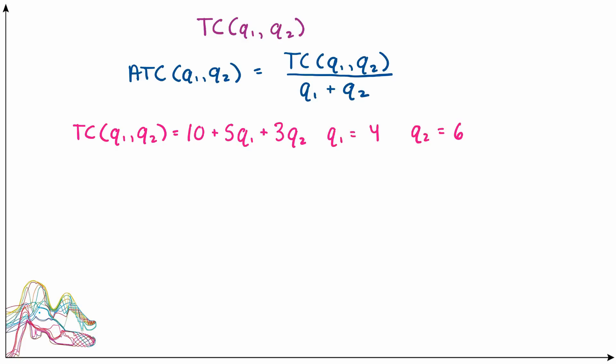Let's do an example. Here we have a total cost function with Q1 and Q2 as parameters: TC(Q1, Q2) = 10 + 5Q1 + 3Q2. Let's say our quantity of the first output Q1 is 4, and our quantity of the second output Q2 is 6.